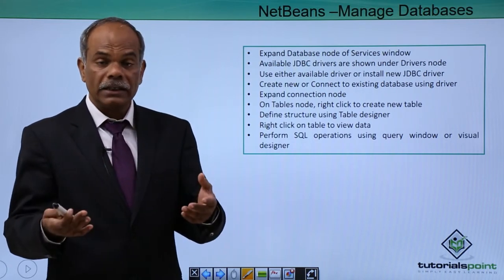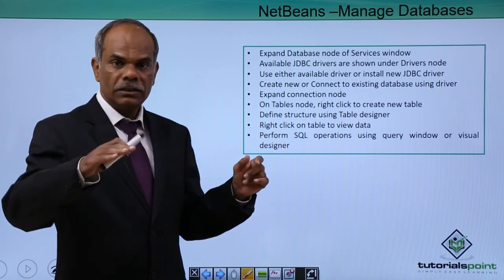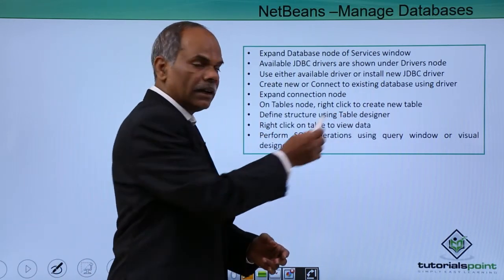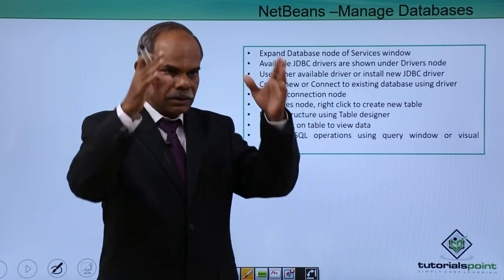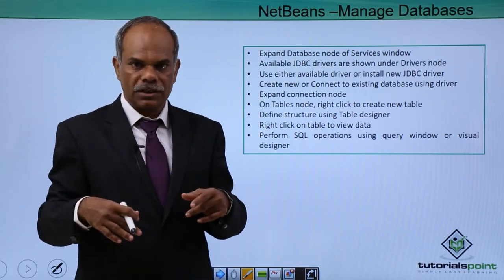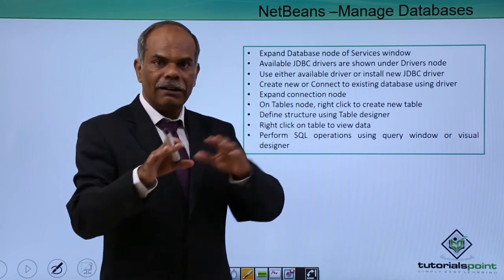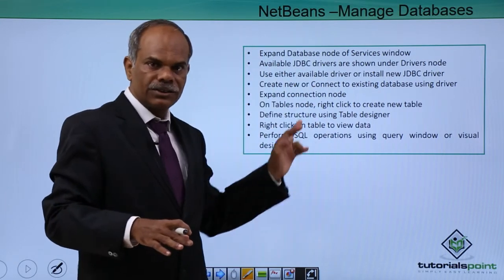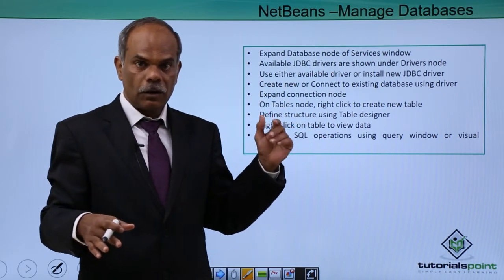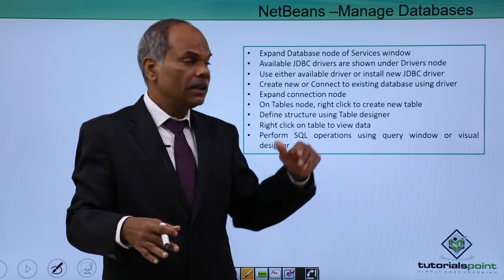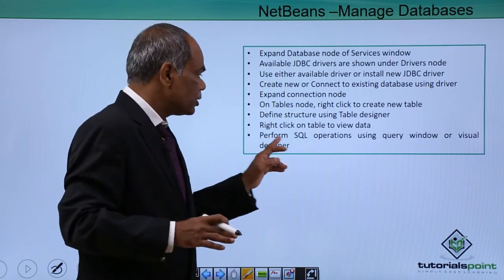If you want to have a look at the data pertaining to a particular table, choose it, right-click and select view data. The data will be displayed in a typical Excel-sheet-like structure. The window that appears in the documents window will have two parts: one will be the Excel-like structure with rows and columns, where the column names correspond to the fields created when the table was created. The upper part of that window will be a SQL window.